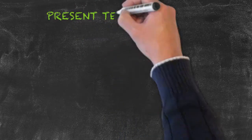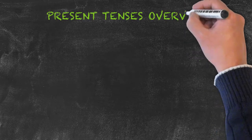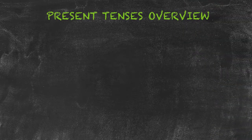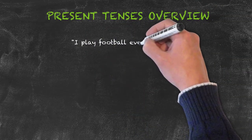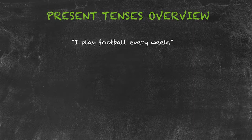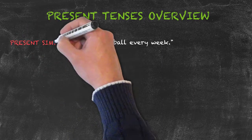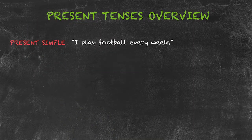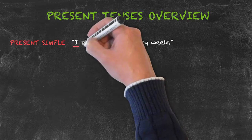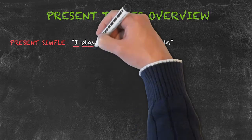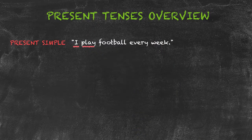We've seen the present tenses in isolation; now let's look at them together. Our first example is 'I play football every week.' This is the present simple tense, and it has the structure: subject 'I' plus verb 'play.'